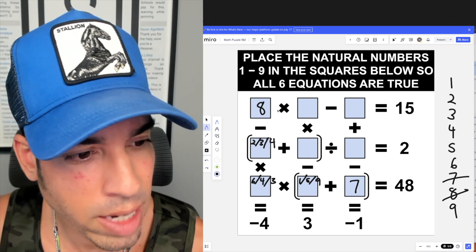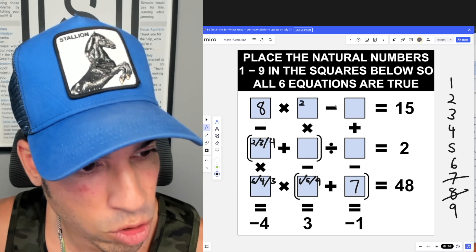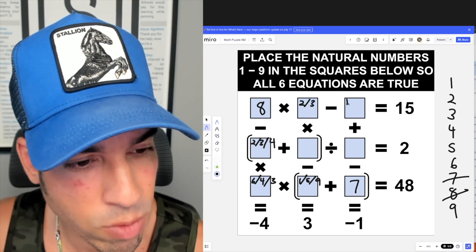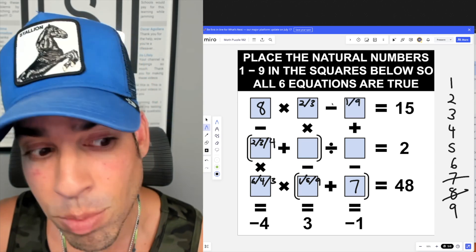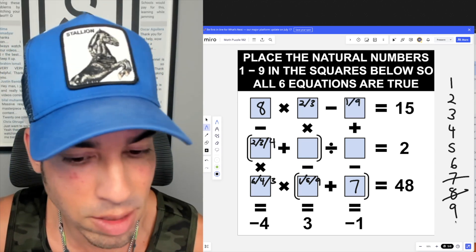If I'm looking at this top equation, I have eight times something minus something equals 15. Obviously we can do eight times two, which is 16 minus one, or we can do eight times three, which is 24 minus nine. That's pretty much it. Eight times four is 32 - that's too big. We can't subtract 17 because that's not an option.